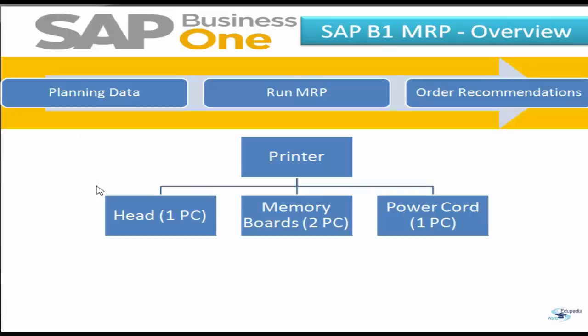Let us see the steps in SAP Business One MRP. The MRP process steps include defining the planning data to be used — one key piece of planning data is our forecast. When we run the MRP wizard, we review the order recommendations resulting from the MRP run. From there, we create either production orders or purchase orders as required. In MRP, the current state of inventory is modeled through the levels of items on hand in each warehouse, supplemented by items already on the way through purchase orders or in production orders as work in progress.